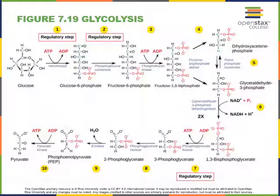Glycolysis, the first step in the oxidation of glucose within cells, occurs in the cytoplasm. Proteins called enzymes function as catalysts that speed up the chemical reactions of glycolysis. There are 10 steps that gradually break down and oxidize glucose, producing two smaller pyruvate molecules, and in the process some energy released from the breakdown of glucose will be stored in other chemicals.